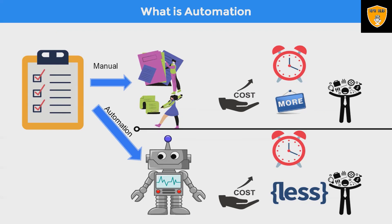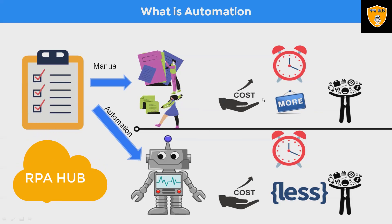When we talk about what is automation, let's consider one example. If we have a number of tasks to be completed manually, it will require more resources to complete that activity, and sometimes it is not accurate to the mark. If we consider cost, timing, and resources, it will take more. But if we assign the same activity to a robot or automate that process using any RPA-based tool or Power Automate, then it will involve less cost and is less time-consuming, and resource usage also decreases.